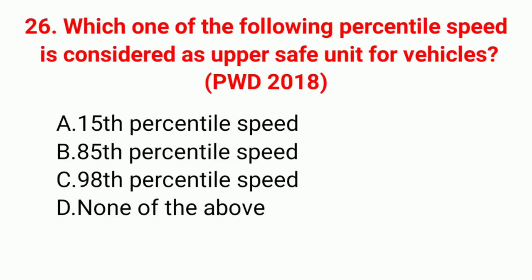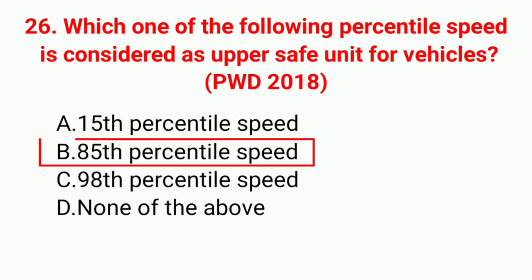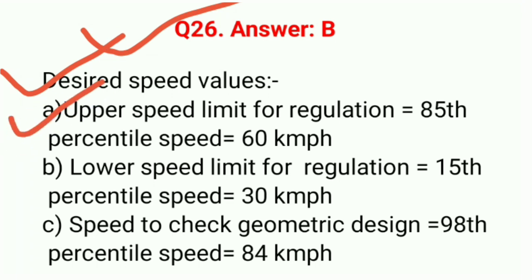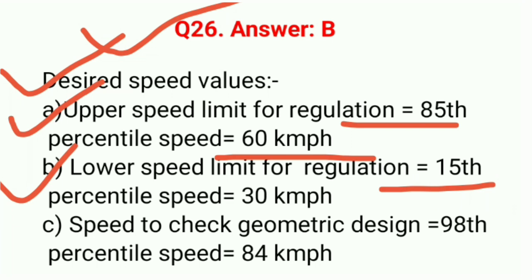Question 26: Which percentile speed is considered as the upper safe limit for vehicles? Correct answer B: 85th percentile speed. Desired speed values: upper speed limit for regulation = 85th percentile speed (60 km/h); lower speed limit for regulation = 15th percentile speed (30 km/h); speed to check geometric design = 98th percentile speed (84 km/h). Answer is B.